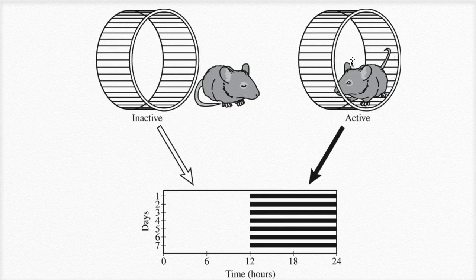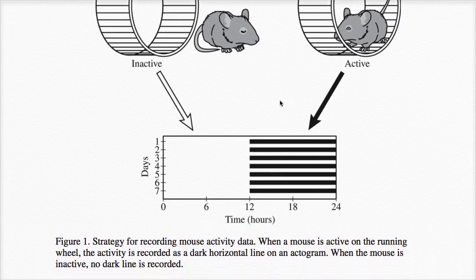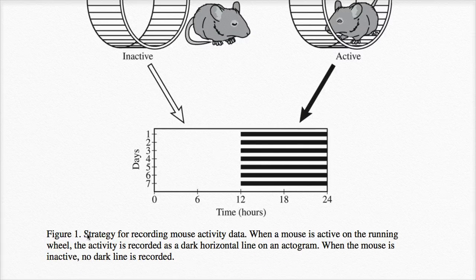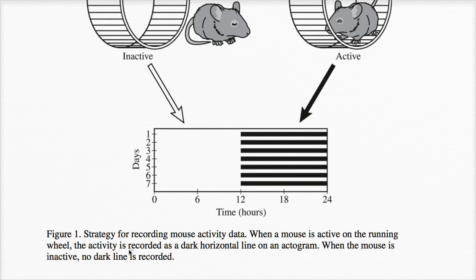And then here, a picture of a mouse that is on the running wheel, maybe running with its eyes open. And then we see our actogram here, and it describes a strategy for recording mouse activity data. When a mouse is active on the running wheel, the activity is recorded as a dark horizontal line on an actogram. When the mouse is inactive, no dark line is recorded.